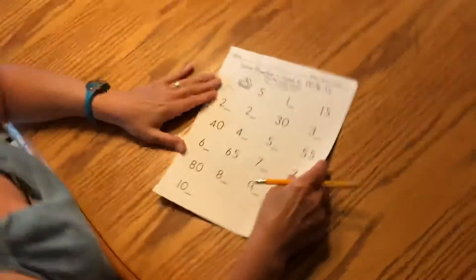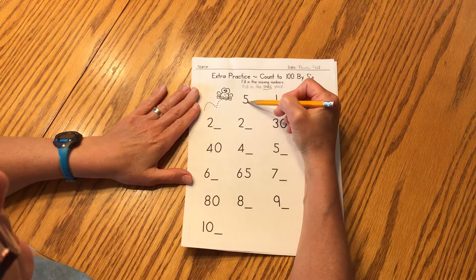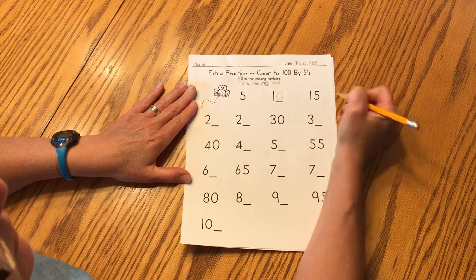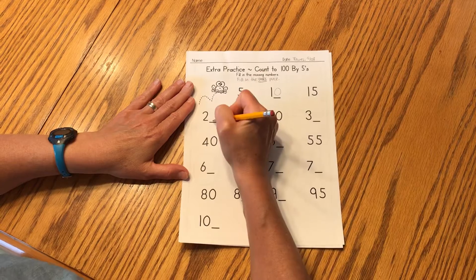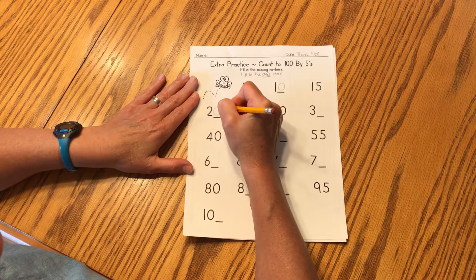All right boys and girls, we are going to count by fives. Here we go. Five, ten, what's missing? The zero. Fifteen, twenty, what's missing? Again, the zero.